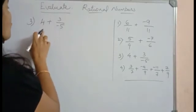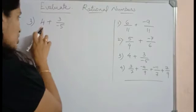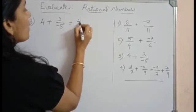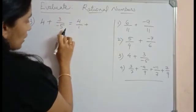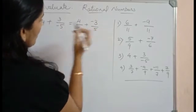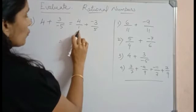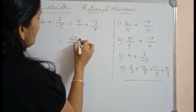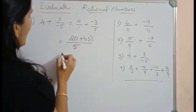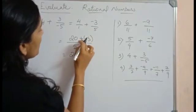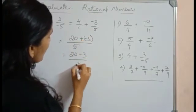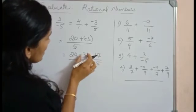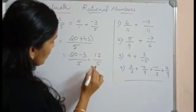See the third question: 4 + 3/(-5). 4 is a rational number and the denominator of this 4 is 1. So we can write this question as 4/1 + 3/(-5), which can be written as -3/5. Now we have to take the LCM. The LCM of 1 and 5 is 5. 4 5's are 20 + (-3). That's equal to 20 - 3 divided by 5. It's equal to 17/5. Here the greater number is 20 and we are subtracting 3 from 20. You'll get 17, and 17/5 will be your answer.